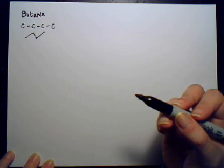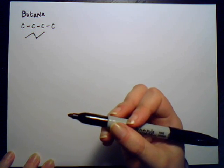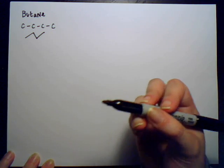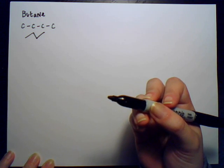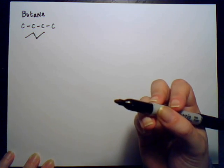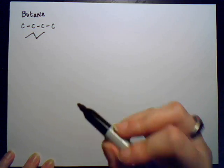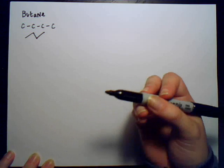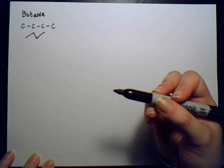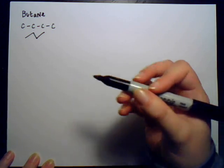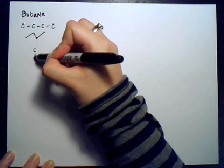Well, if we recall our geometric shapes from general chemistry, we can remember that we had linear, bent, tetrahedral, square planar, trigonal planar, and all of those. These molecules are going to follow the same sort of arrangement. In organic chemistry, one of the most common shapes we'll see is the tetrahedral shape. And I'm going to draw one for you.